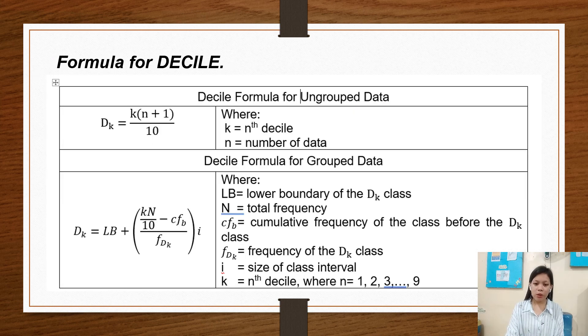So this is the decile formula for ungrouped data. D sub K equals K times N plus 1 over 10. Divide by 10 because decile is divided into 10 equal parts. Where K equals the 9 deciles and N is the number of data.